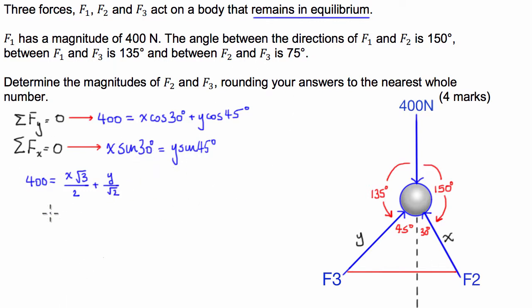Now with the second formula, we've got x times the sine of 30. So we know that the sine of 30 is a half, so we're going to just say x over 2. It's going to have to be equal to y times the sine of 45, which is just 1 on root 2 again. So we've got y on root 2.